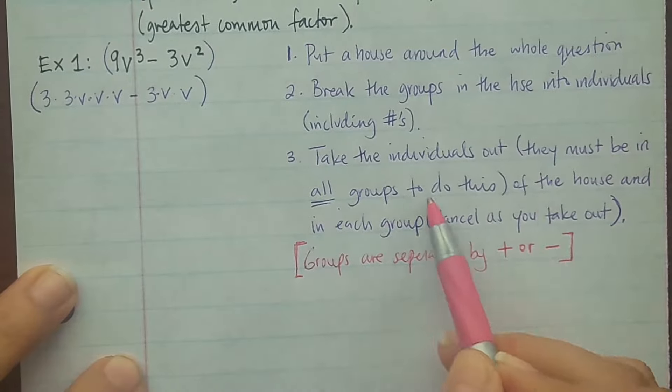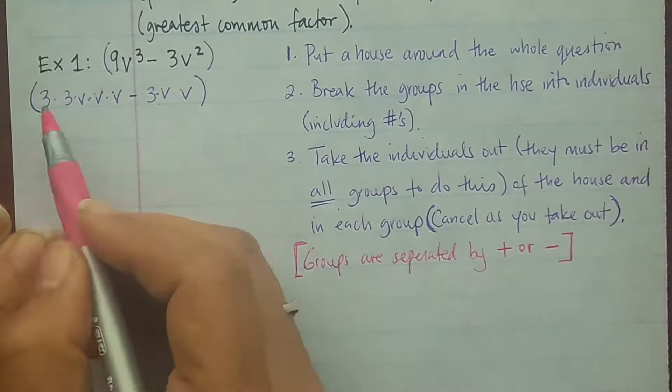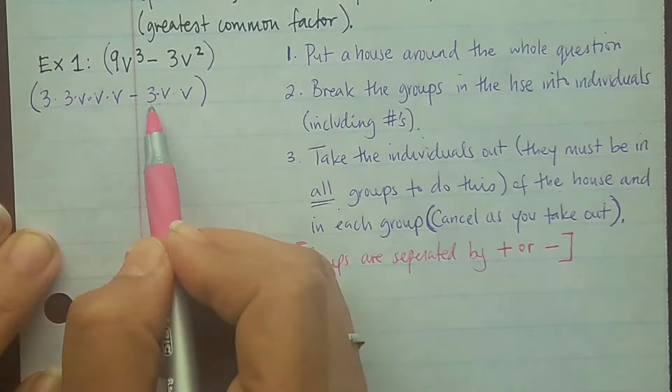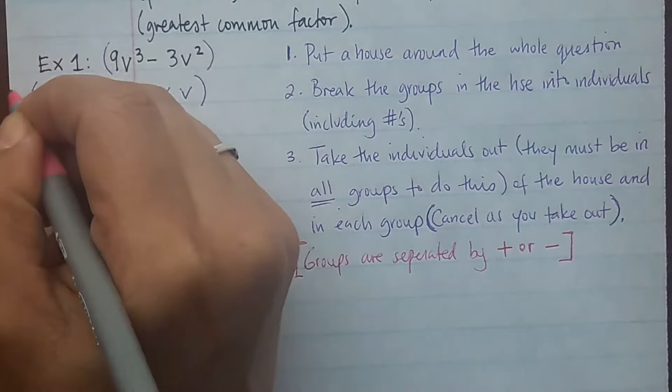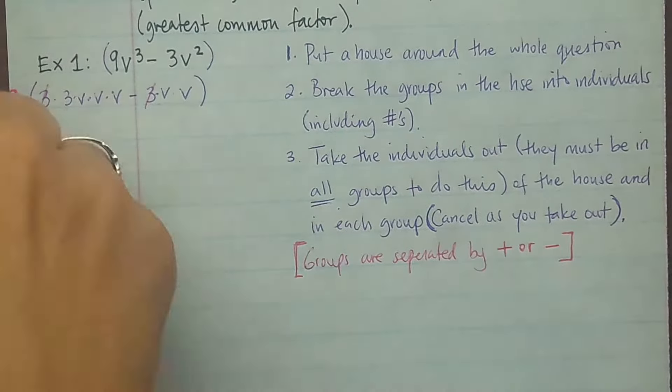Groups are separated by the addition or subtraction sign. So what can I take out? I can take out a 3 because it's in both groups. And then as I take it out I'm going to cancel it from both groups. It has to be in both groups.